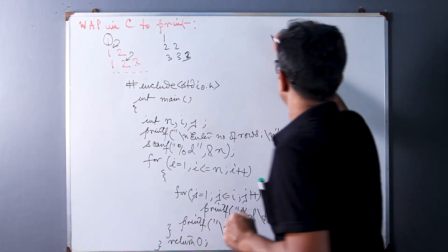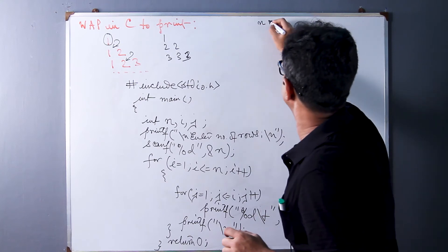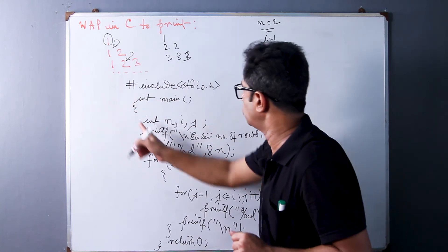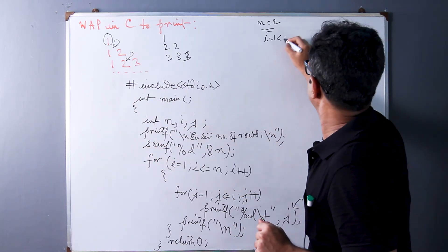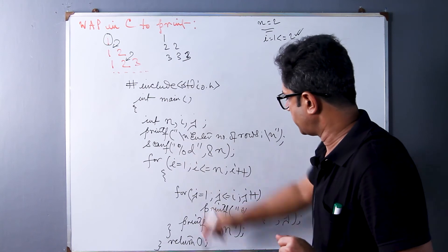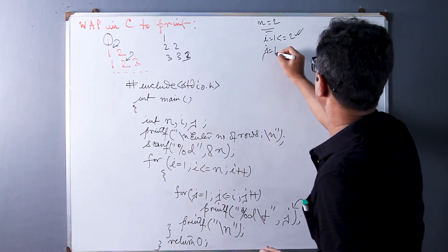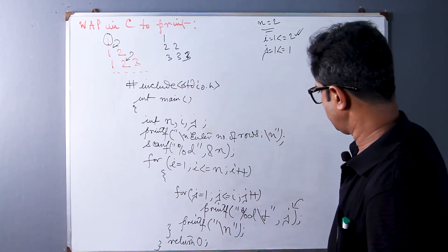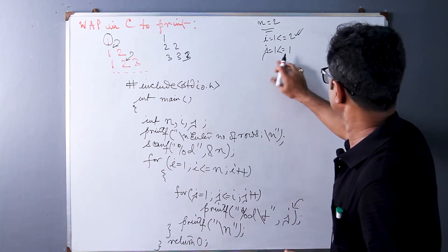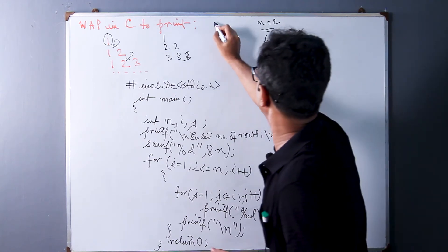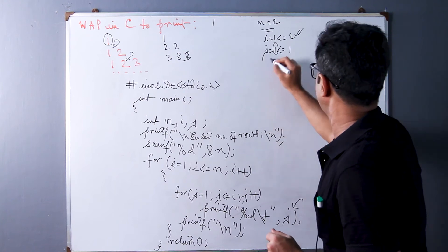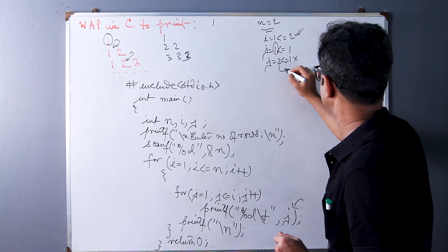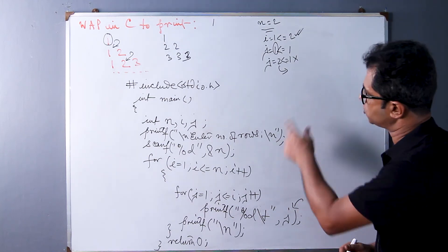Let us trace through with n = 2. i is initialized to 1; i <= 2, so we enter the outer loop. In the inner loop, j = 1; j <= i, which is 1, so the condition holds. j is printed — j is 1, so 1 is printed. Then j is incremented to 2; j <= 1 is false, so we exit the inner loop.